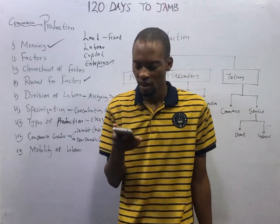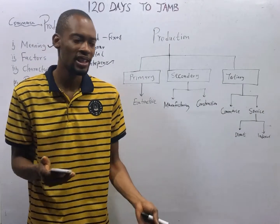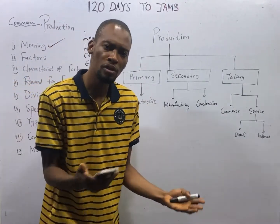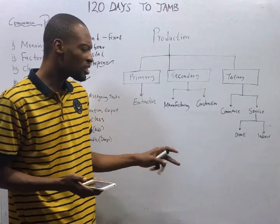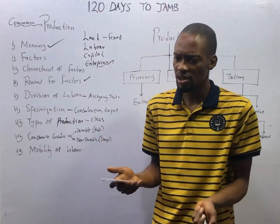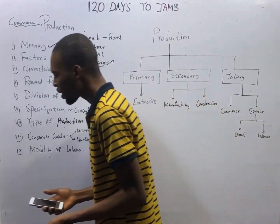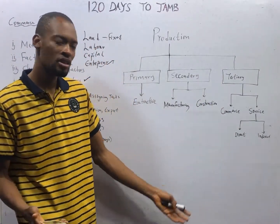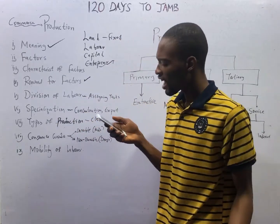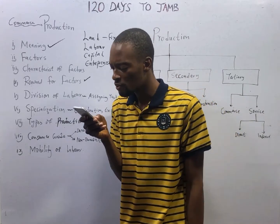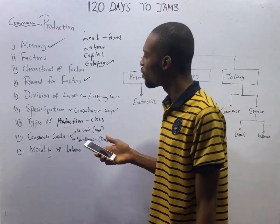Characteristics of labor: labor can be trained to improve its efficiency. You can improve and train workers so they become more efficient. Labor is also the most mobile factor of production — you can move people and ideas from one location to another for production. This leads us to the concept of mobility of labor, which is the movement of labor from one occupation or one location to another.